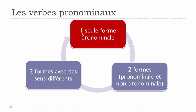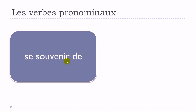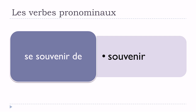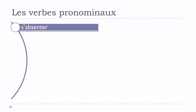We'll start with the situation when we've got only one form: la forme pronominale. For example, the verb se souvenir de — many students make the mistake of using souvenir without se, trying to use it as non-pronominal. Unfortunately, souvenir without se doesn't exist. If you want to use this verb, you have to use it with se — la forme pronominale.